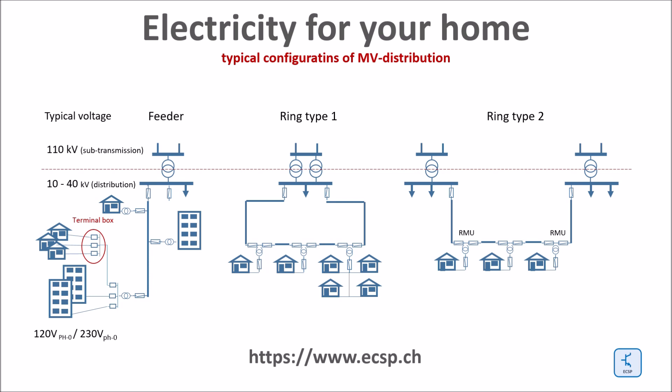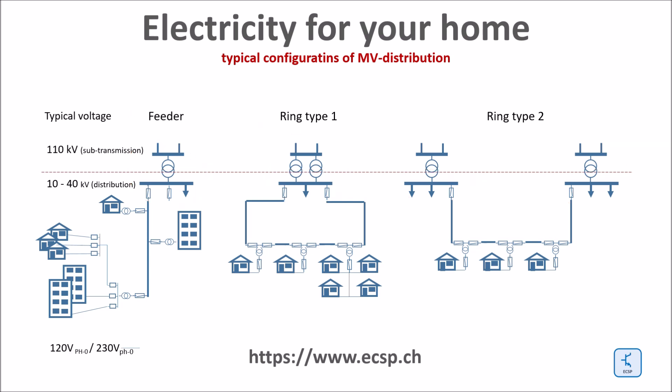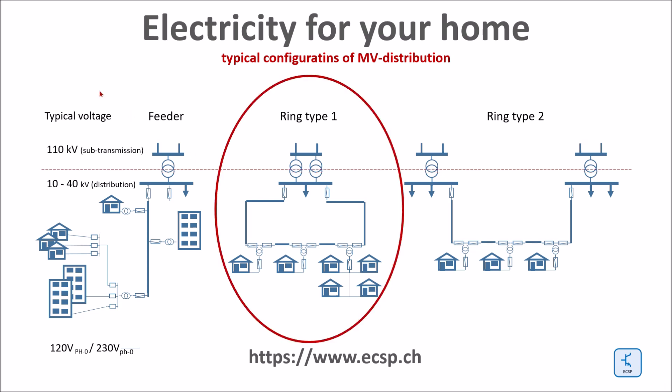So far we have seen the terminal box and the secondary substation connecting low-voltage to medium-voltage. Now we are looking at the primary substation, including the configuration of the medium-voltage distribution. The primary substation connects the medium-voltage to the high-voltage grid. The simplest configuration is a feeder arrangement. In rural areas this can even be single-phase. A failure along the line is cleared by the breaker in the primary substation, and the feeder stays out of service until repair.